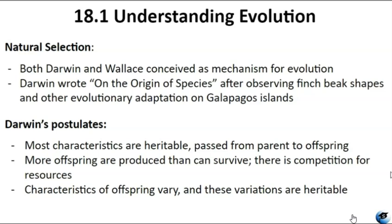Darwin observed distinct yet similar species on the Galapagos Islands, particularly noticing the variation in finch beak shapes related to food acquisition. Darwin termed this mechanism natural selection, which involves the more successful reproduction of individuals with favorable traits that enable them to survive environmental changes, leading to evolutionary change. For instance, Darwin observed that giant tortoises in the Galapagos had longer necks on islands with drier, lower vegetation. The tortoises with longer necks had a selective advantage because they could reach more leaves and access more food. During times of drought, this gave them a better chance of survival and reproduction, and over time the long-necked trait became prevalent in the population.